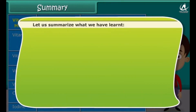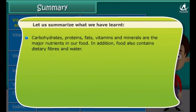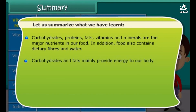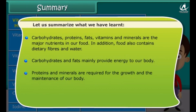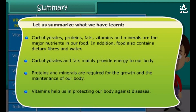Let us summarize what we have learned. Carbohydrates, proteins, fats, vitamins and minerals are the major nutrients in our food. In addition, food also contains dietary fibers and water. Carbohydrates and fats mainly provide energy to our body. Proteins and minerals are required for the growth and the maintenance of our body. Vitamins help us in protecting our body against diseases.